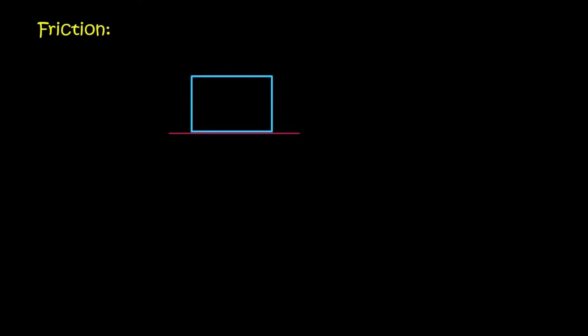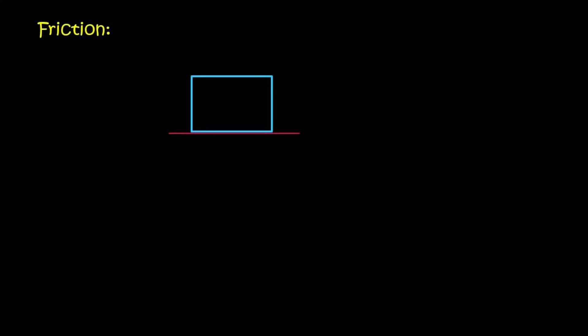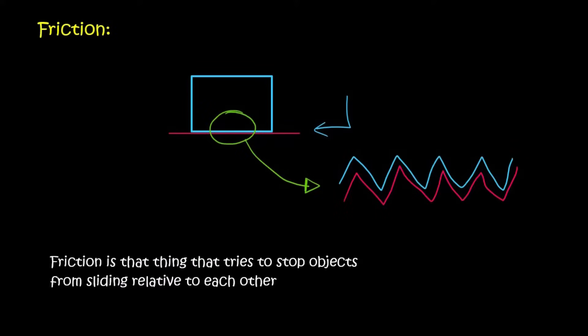Friction is something that tries to stop objects from sliding relative to each other. But why does it exist? If we look at this diagram, anything in real life looks perfect from far — the road looks extremely flat, or a table looks completely smooth. However, if you take a microscope and zoom in very closely, you will notice irregularities. On a microscopic level, the surface actually looks rough, and due to those imperfections, the box and the table are going to get in the way of each other, making it difficult to slide. That is friction.